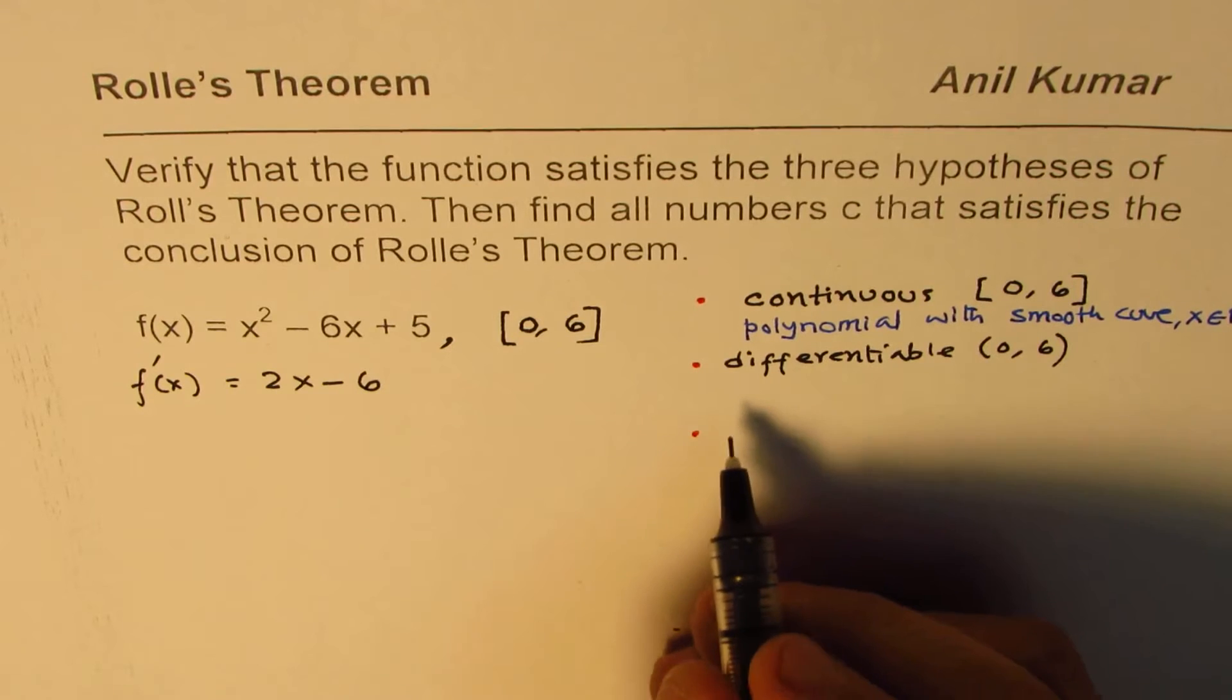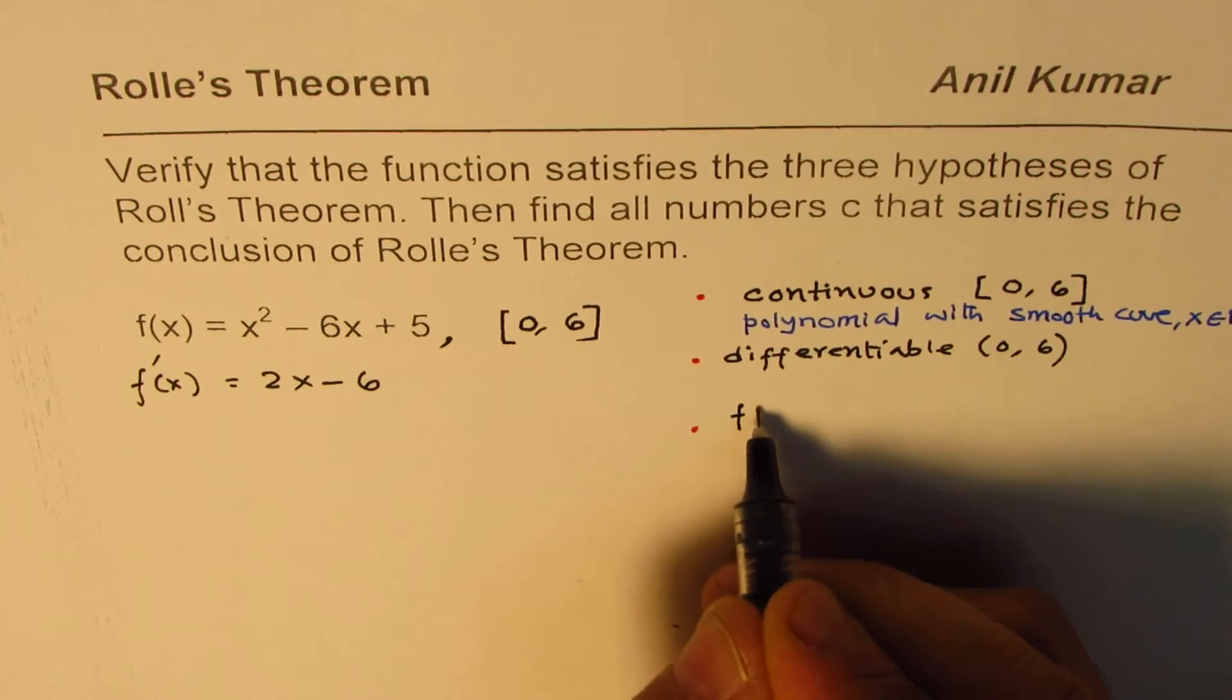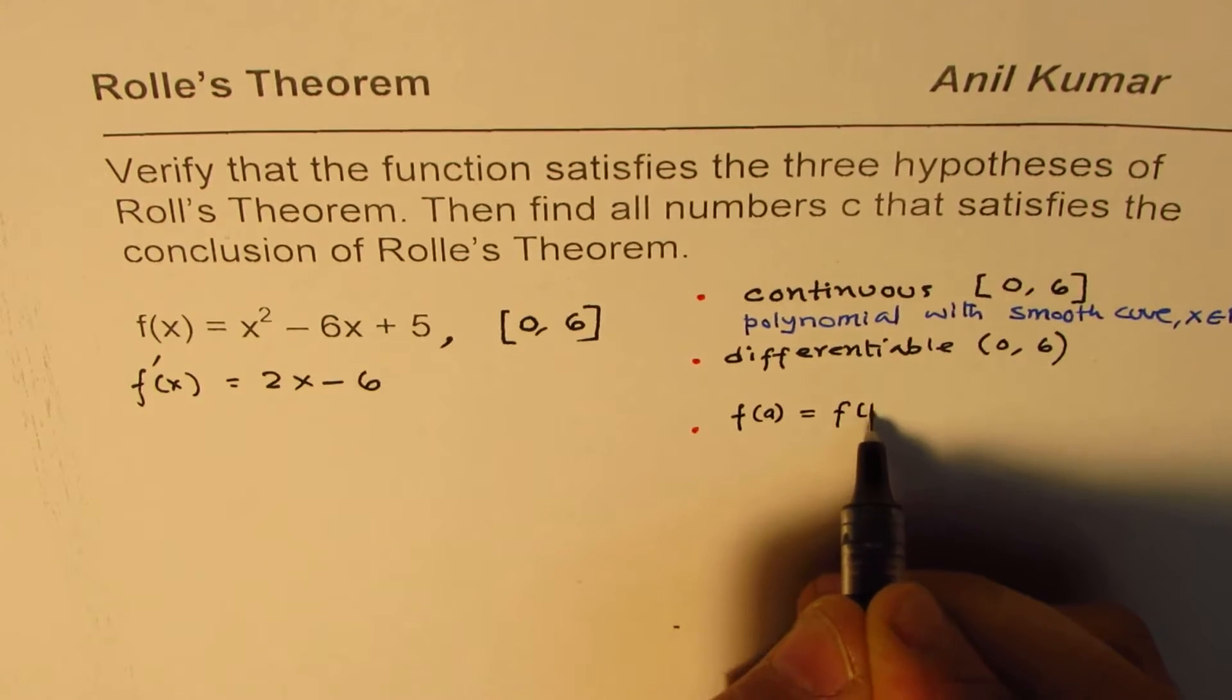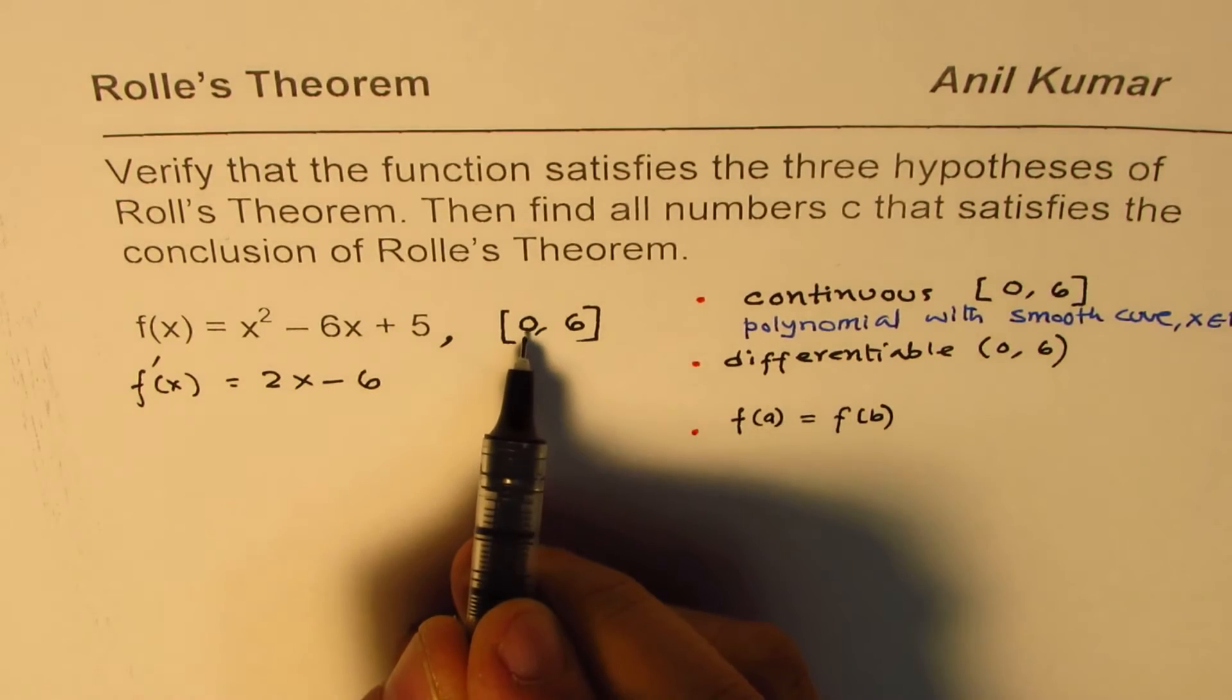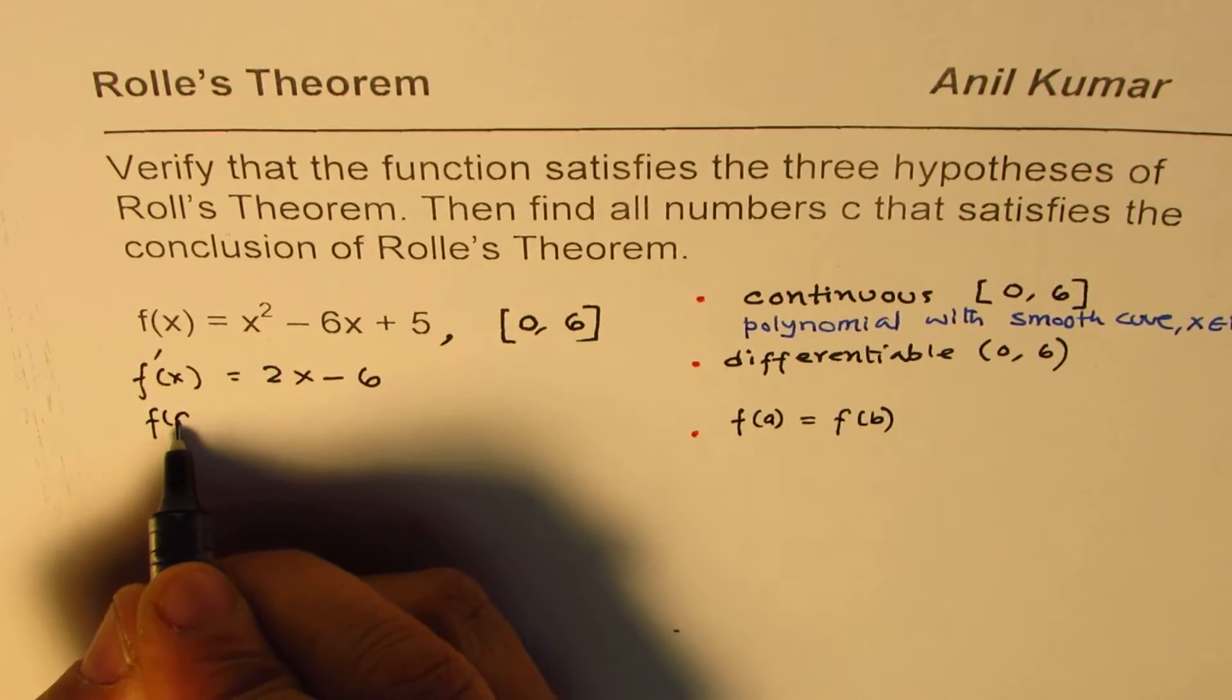Now, third thing is that there should be two points, that is, f(a) should equal f(b). So, a is 0 for us, b is 6. What is f(0) equal to? If I substitute 0 here, I get 5.